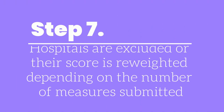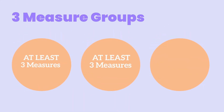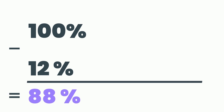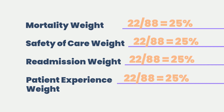Step 7: hospitals are excluded or their score is re-weighted depending on the number of measures submitted. A hospital must report at least three measure groups with at least three measures in each group, and this must include the Mortality or Safety of Care group in order to receive a star rating. Once the minimum measure and measure group thresholds are met, any additional measures the hospital reports would be included in the overall star rating calculation. If you met the minimum threshold but didn't report any Timely and Effective Care measures, that measure group is subtracted from the total. For example, the overall score is worth 100, but because you didn't submit those measures, you subtract the group weight of 12 percent — now your overall score is only worth 88. Each group weight is then based on 88 instead of 100, so categories that would have been worth 22 percent are now worth 25 percent of the overall score.